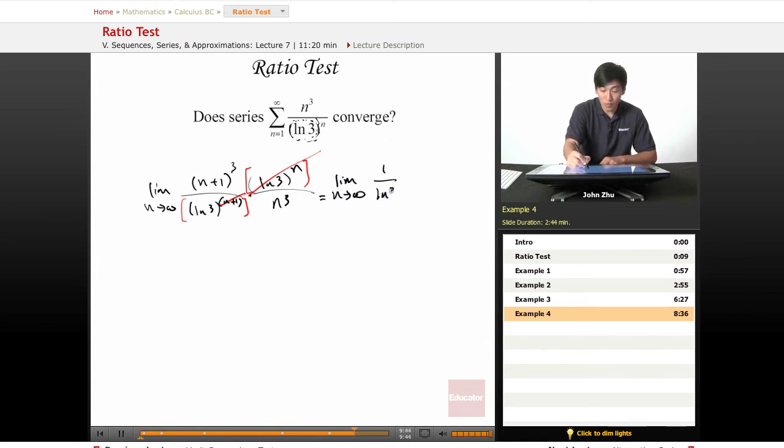So we are left with limit as n approaches infinity, 1 over ln of 3, remember that is just a constant term, times n plus 1 over n. Well, we can group the cubed term together. So moving this term outside the limit, we just have a limit as n approaches infinity of n plus 1 over n cubed.